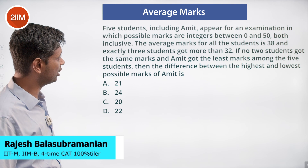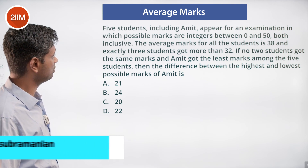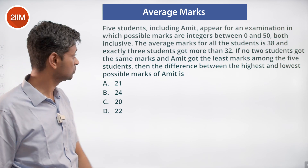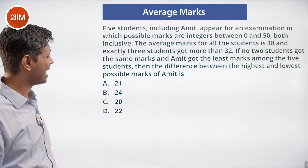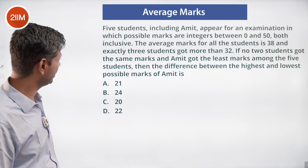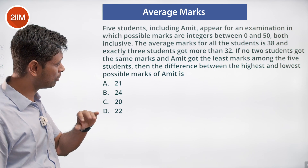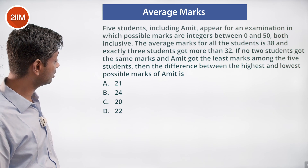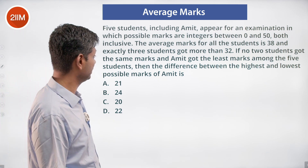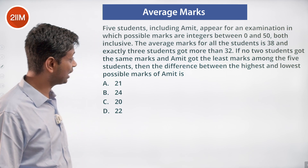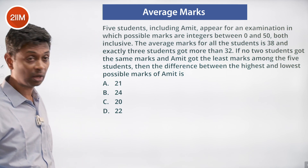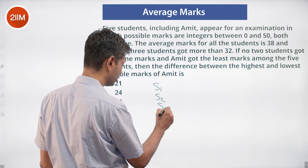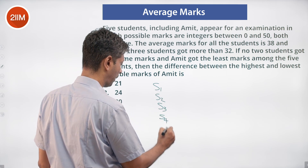Five students including Amit appear for an examination. Possible marks are integers between 0 and 50, both inclusive. The average marks for all students is 38, and exactly three students got more than 32. No student got the same marks, and Amit got the least marks among the five. Find the difference between the highest and lowest possible marks of Amit.